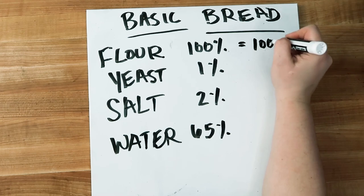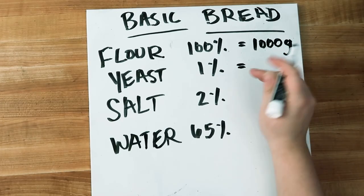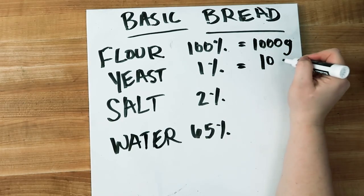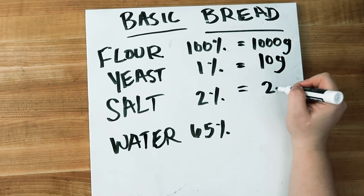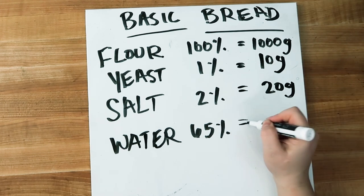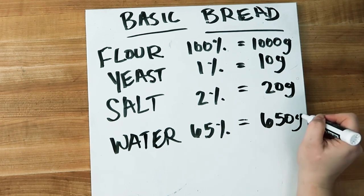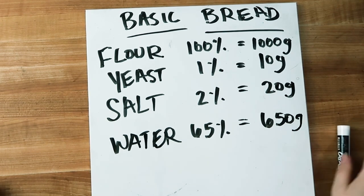To calculate going the other way — where we have the percentages and are trying to find the amounts — we first decide how much flour to start with. For a recipe where you want maybe two loaves of bread, 1000 grams is a pretty good place to start. Then multiply 1000 by each percentage. Remember to move the decimal place two points: for 1 percent multiply 1000 by 0.01, giving us 10 grams of yeast; for salt multiply by 0.02 giving us 20 grams; and for water multiply by 0.65 giving us 650 grams of water.